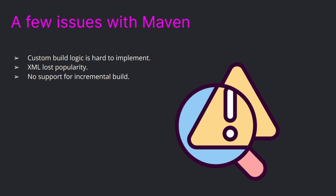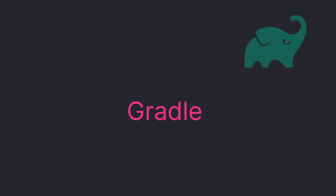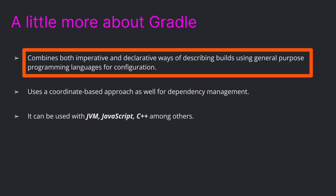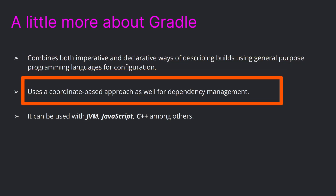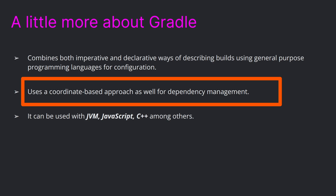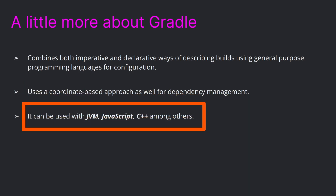Let's get the elephant out of the room — Gradle. Gradle is a build system that combines both imperative and declarative ways of describing builds. It uses general-purpose programming languages for configuration, allowing simple builds to be defined declaratively and complex builds done imperatively. Gradle uses a coordinate-based approach for dependency management similar to Maven: group ID, artifact ID, and version.